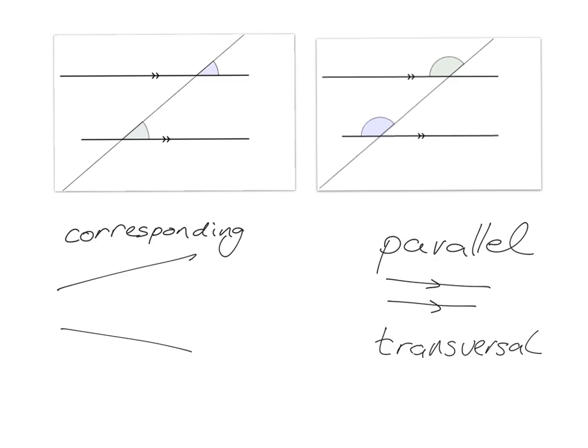These other ones on this side are also corresponding because they sit in the same place — above and to the left, above and to the left of the transversal. You could also have other corresponding angles, like this one and this one, which are corresponding because they're sitting in the same place: below the parallel line to the right, below the parallel line to the right of the transversal. So that's what we mean by corresponding — they're sitting in the same place relative to the parallel lines.